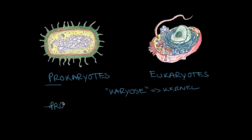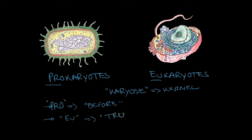The prefix 'pro,' as seen in prokaryotes, means 'before' — so before a nucleus. These types of cells actually do not have a real nucleus. And 'eu,' in eukaryotes, means 'true' or 'good,' meaning these cells possess a true nucleus. Key difference: prokaryotes have no nucleus, and eukaryotes possess a true nucleus.